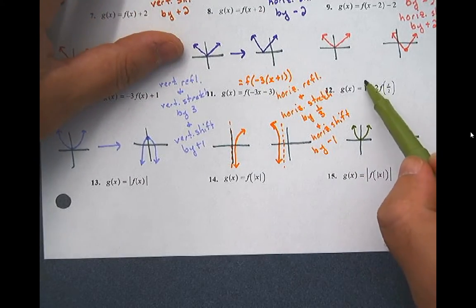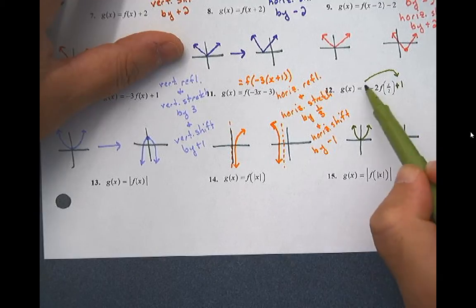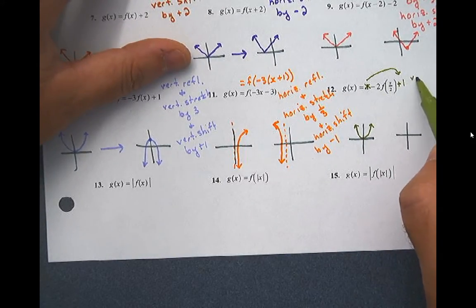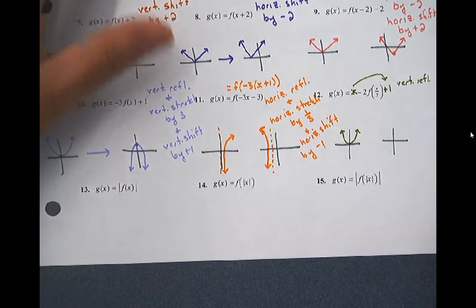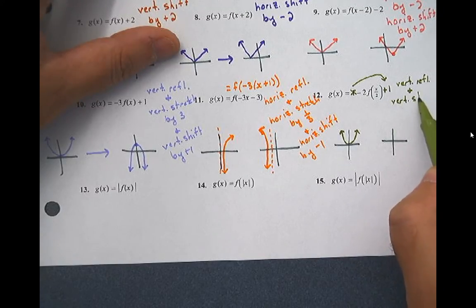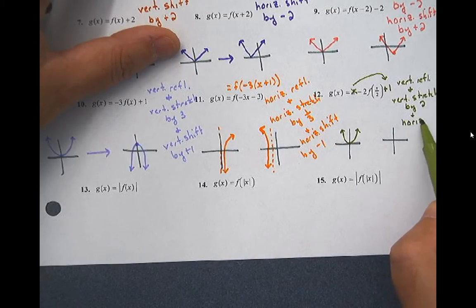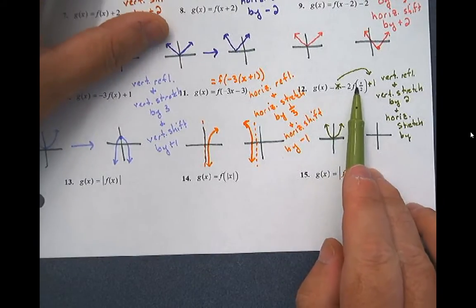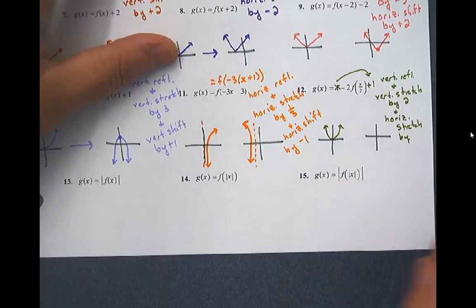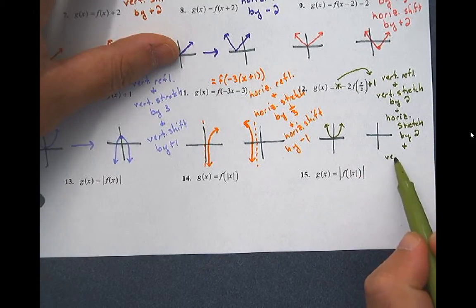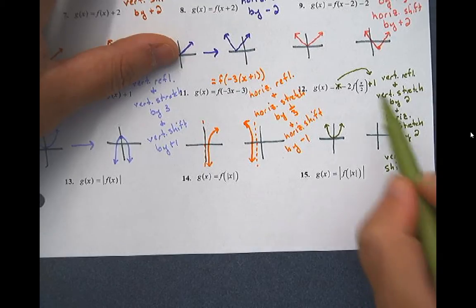So this is one of those sneaky ones where a term really belongs on the end. We have negative 2 times f of x over 2, plus 1. The negative is attached to the function — so that's a vertical reflection. The 2 is attached to the function — so that's a vertical stretch by 2. The x over 2 is a one half connected to the x — so that's a horizontal stretch by 2 because it always does the inverse. And the plus 1 is attached to the function — so that's a vertical shift of plus 1.